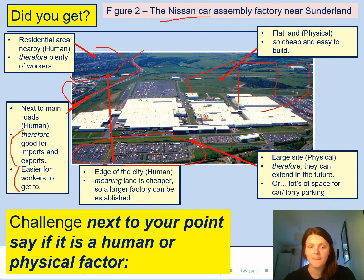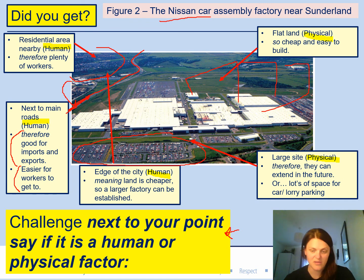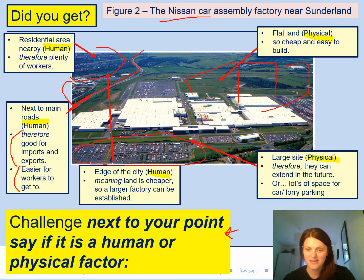There's also a challenge: next to each of your points, say whether it's a human or a physical factor. The residential area and the main road are human factors. The edge of the city is also human. The site being large and the land being flat — those are physical factors. So human geography affects people, and physical geography affects the natural environment.